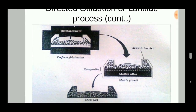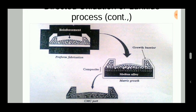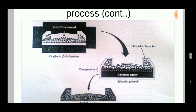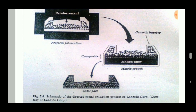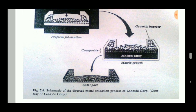In this diagram we can see the complete process. A reinforcement or preform is placed inside a chamber which is coated with a growth barrier layer. Then molten alloy is placed in the container so that the reinforcement can be immersed inside it. The pores present in the reinforcement are filled with the molten alloy or matrix, which is then cooled to obtain the required ceramic matrix composite part.